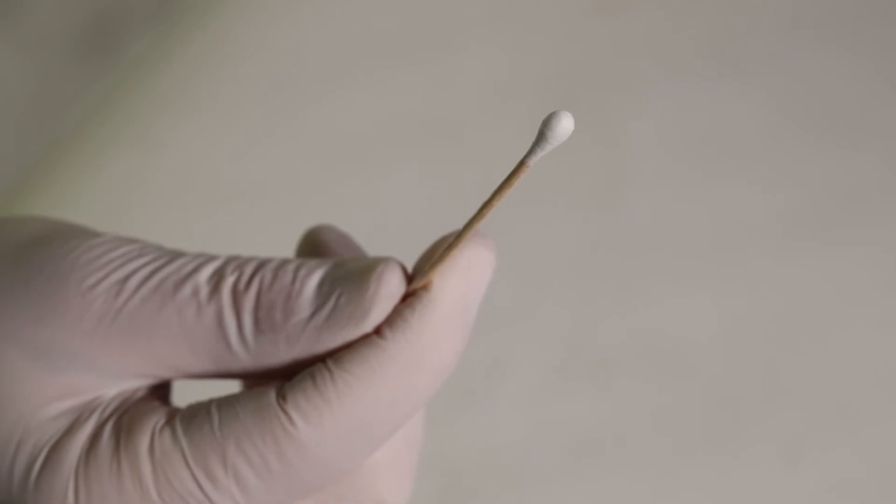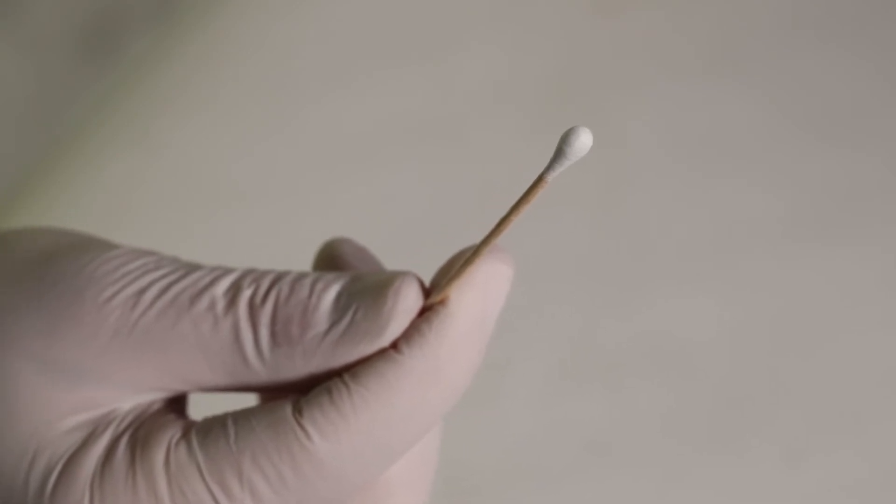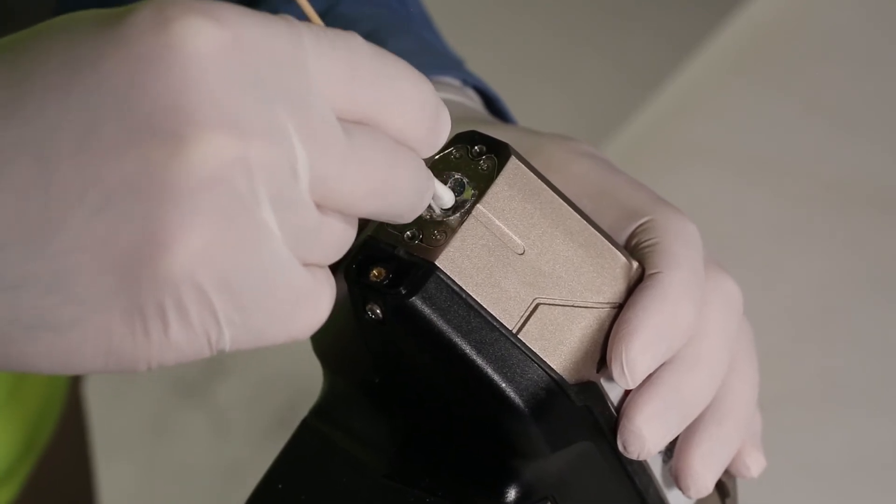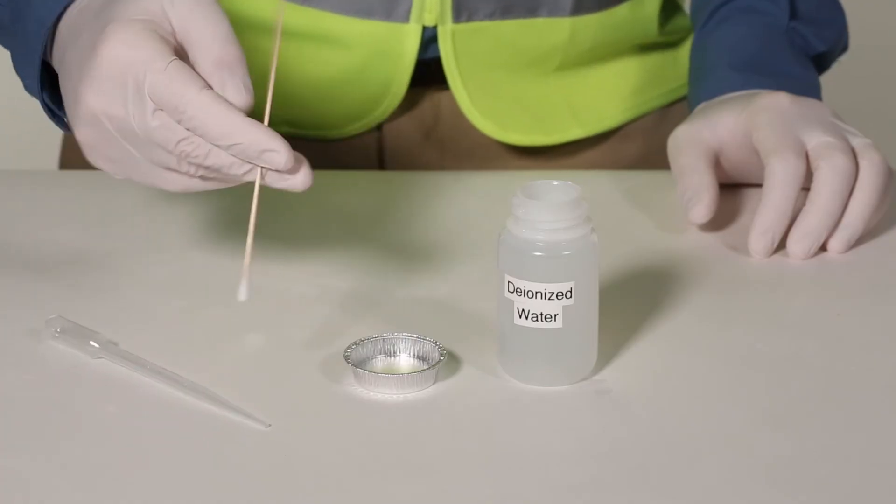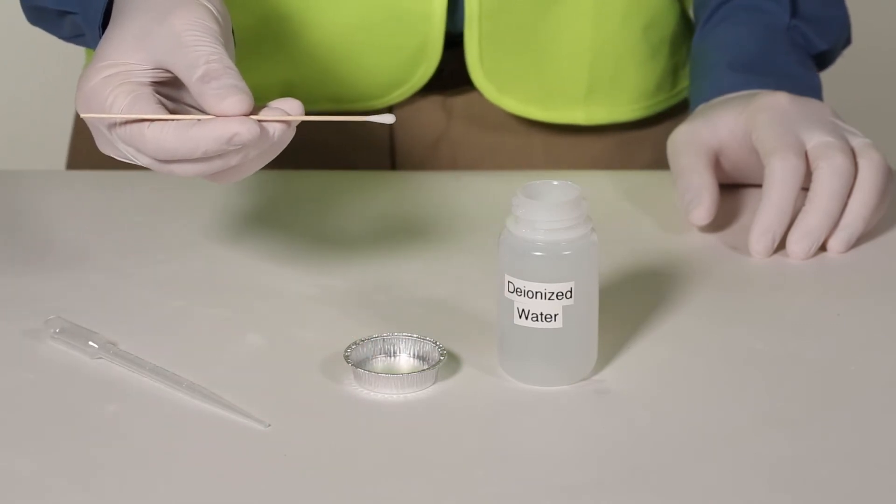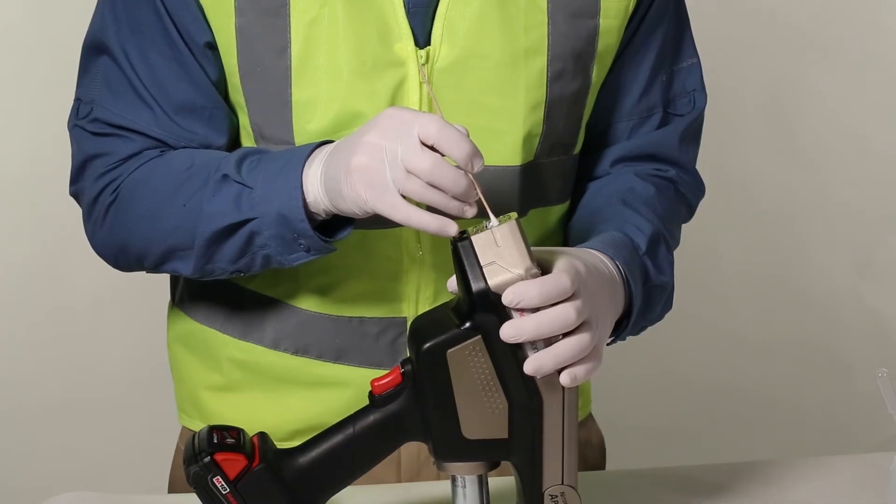Once the swabs stop becoming dirty, the laser windows are sufficiently clean. Clear any loose or dry cleaning mixture from the sample chamber by using a dry cotton swab. Proceed by dipping a new cotton swab into a small amount of deionized or distilled water and remove any cleaning mixture from the sample chamber.